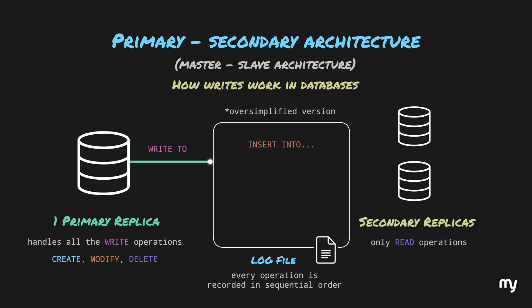For example, when an insert query is executed, it's recorded in the log file as a database instruction along with a sequence number — say, 223. Following that, at sequence 224, you might find a commit or rollback instruction, depending on whether the transaction was successful or not. The database processes these instructions from the log and applies them in the exact sequence they were recorded. Read operations don't get recorded in the log, as they simply retrieve information without creating, modifying, or deleting data. This concept of a log forms the foundation of the different replication strategies.